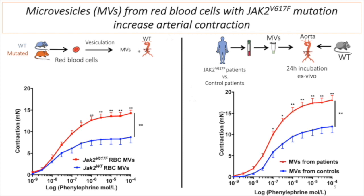As you can see on the left panel, wild-type aorta exposed to JAK2 mutated erythrocyte-derived microvesicles in red display a major increased contraction in response to vasoactive drugs, in comparison to wild-type aorta exposed to wild-type erythrocyte-derived microvesicles in blue. The same results were found using microvesicles from patients carrying JAK2 mutation in red, compared to controls in blue in the right panel. We also demonstrated that NO pathway inhibition and endothelial oxidative stress are implicated in this increased arterial contraction in myeloproliferative neoplasm.